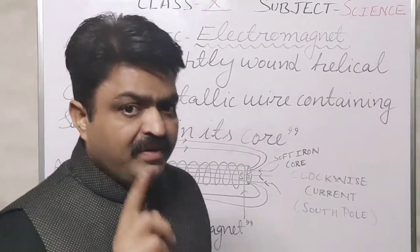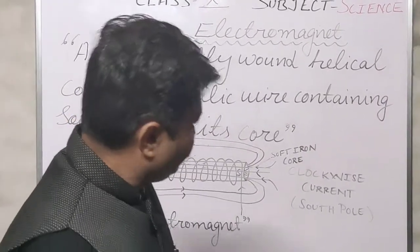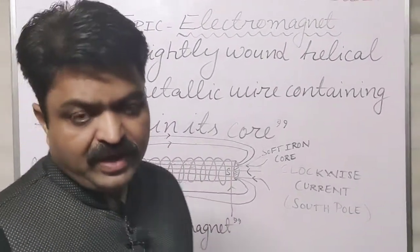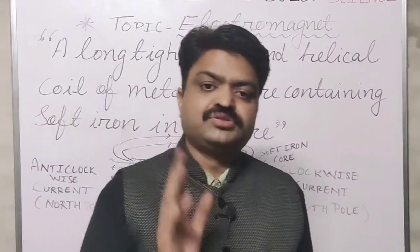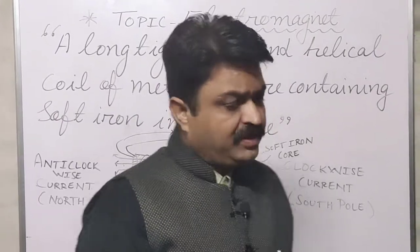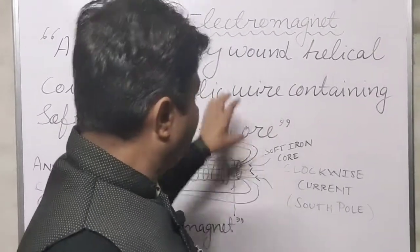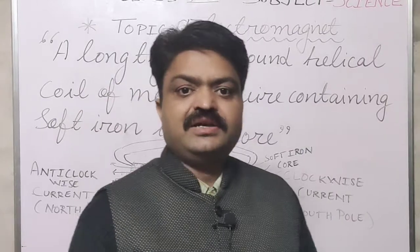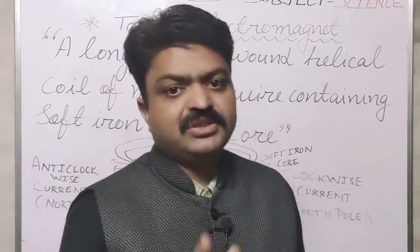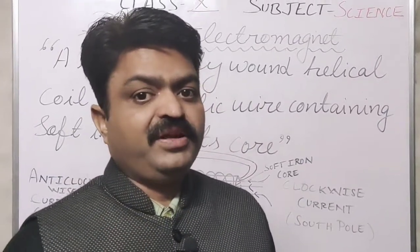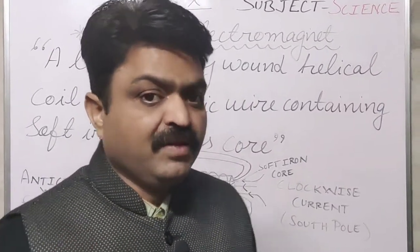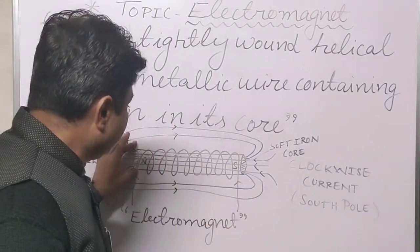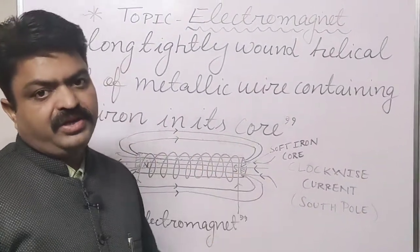That's why if we compare the straight conductor, circular wire, and solenoid with this, the electromagnet is the device that produces the most magnetic field. Why? Because it contains a soft iron rod in it.